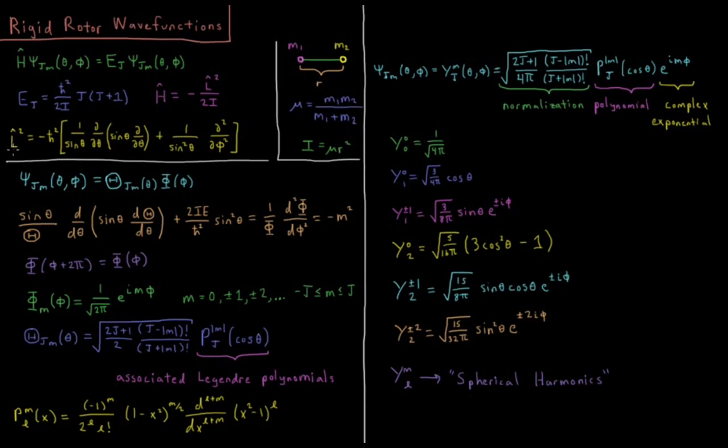And our angular momentum squared operator, which we had previously derived, is this mess here, which is negative h bar squared times 1 over sine theta d d theta of the product sine theta d d theta plus 1 over sine squared theta second partial derivative with respect to phi.